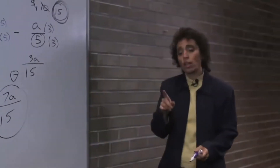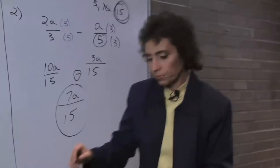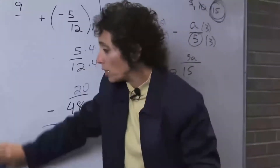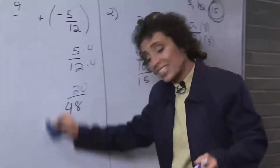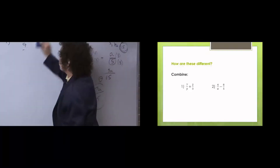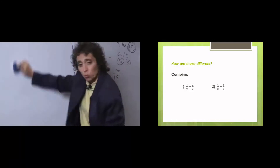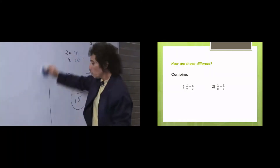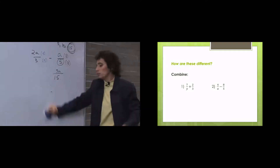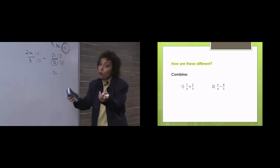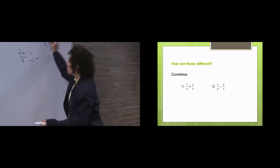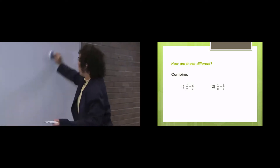Let's try another one, just to make sure you got it. Remember, whatever you do to the bottom, you must do to the top. A lot of people take care of the denominator but never take care of the numerator. You will get very frustrated if you don't take care of it as well, because then you no longer have an equivalent fraction if you only multiply the bottom.